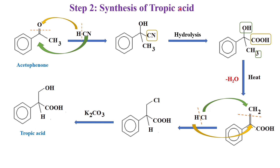So what is step 2? Synthesis of tropic acid. We have taken acetophenone that combines with HCN — H combines with O and CN adds to carbon. On hydrolysis, cyanide is converted to acid. On heating, OH and H are removed as water giving the alkene. By adding HCl, Cl adds to CH2 and H adds to carbon. Then by using potassium carbonate, Cl is replaced by OH and we got tropic acid.